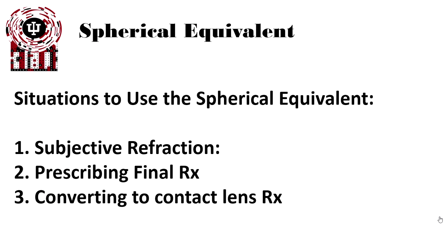As we're modifying people's prescriptions, we're changing their sphere power and their astigmatism. Whenever we change their astigmatism enough, we need to modify the sphere power to maintain the spherical equivalent at all times, thereby giving us the best end results for refractions.